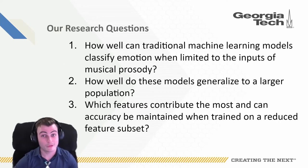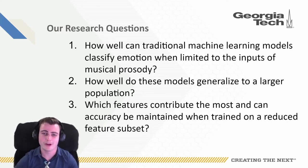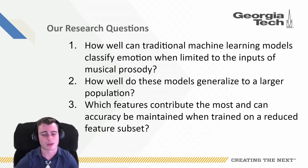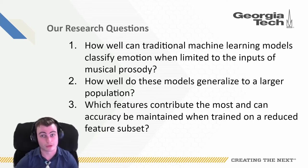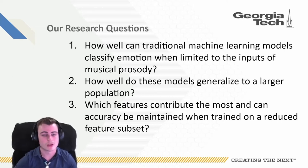We have three research questions in this paper. First, how well can traditional machine learning algorithms classify emotions when limited to only the input of musical prosody? Next, how well do these models generalize to a larger population? And finally, which features contribute the most to accuracy, and can accuracy be maintained when trained on a reduced subset of their overall feature vector?